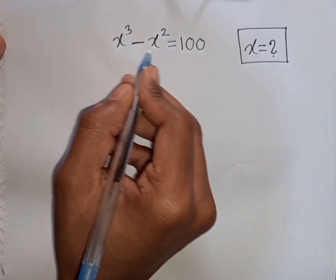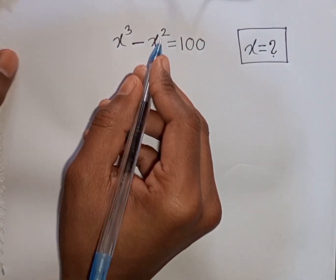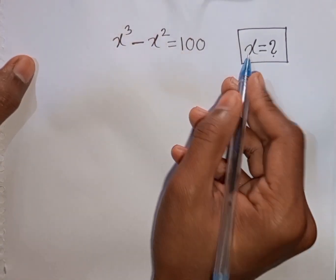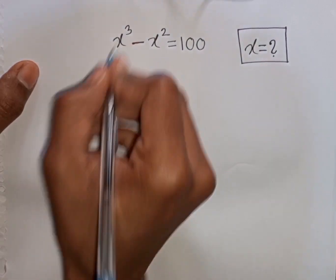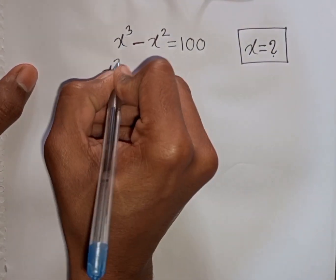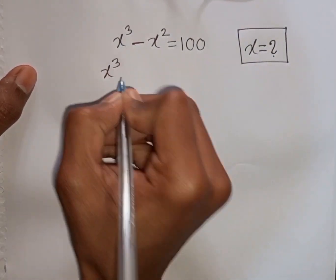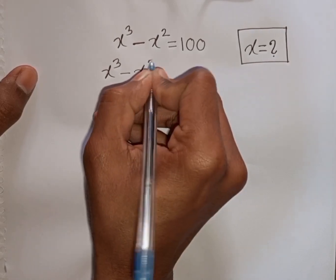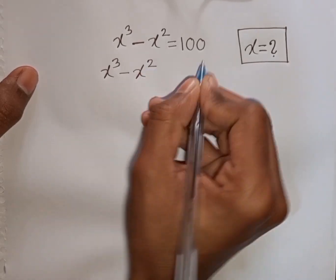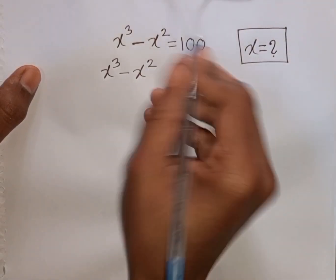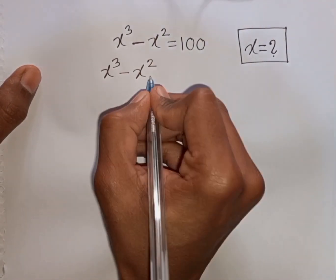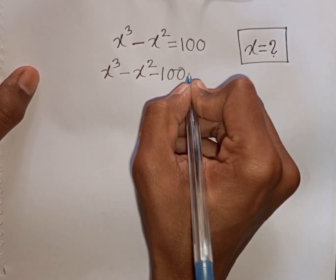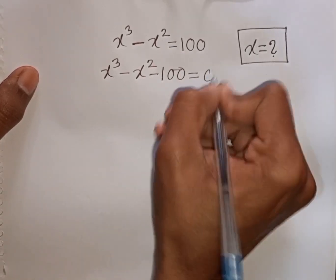x power 3 minus x power 2 is equal to 100. Find the value of x. So we have x power 3 minus x power 2. Then this plus 100 take to the left side, so this will be minus 100 then is equal to 0.